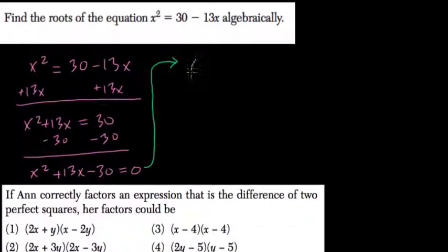So, that helps us, right? x squared plus 13x minus 30. So, what are the factors of negative 30 that add to positive 13? That's our goal here. So,